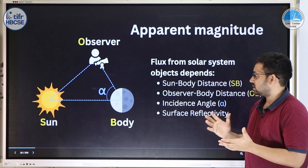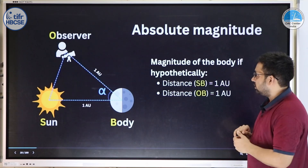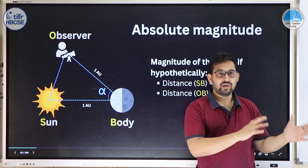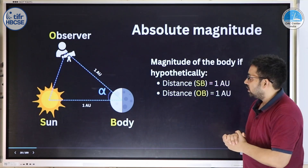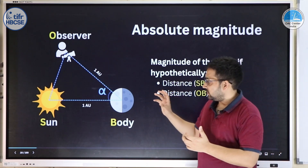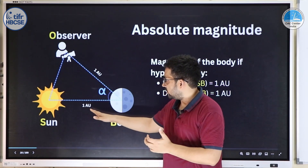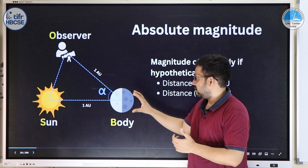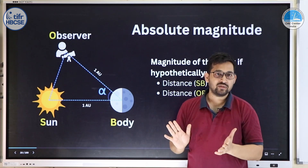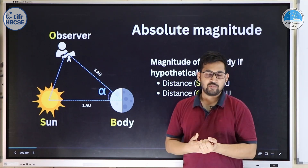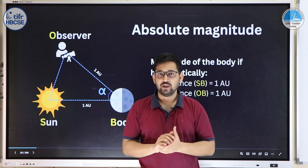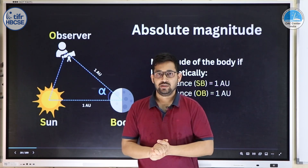Surface reflectivity also plays a role, though that requires more precise measurement. For solar system objects, absolute magnitude is defined differently — we don't place them at 10 parsecs, as they would be too faint. Instead, absolute magnitude is defined for a hypothetical configuration where both the Sun-to-body distance and the observer-to-body distance are 1 astronomical unit. This configuration is almost never practical, but it is the standard definition for solar system objects.